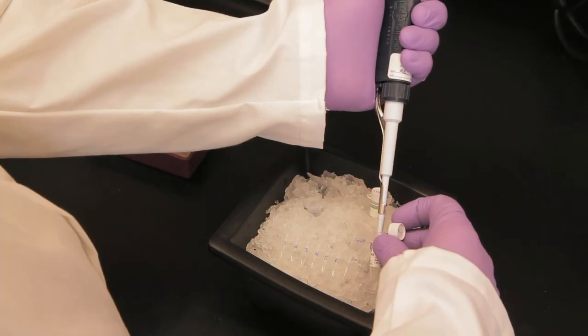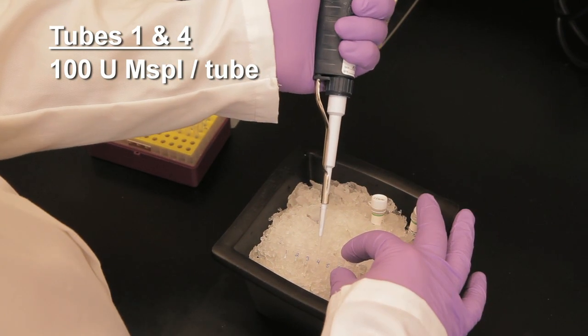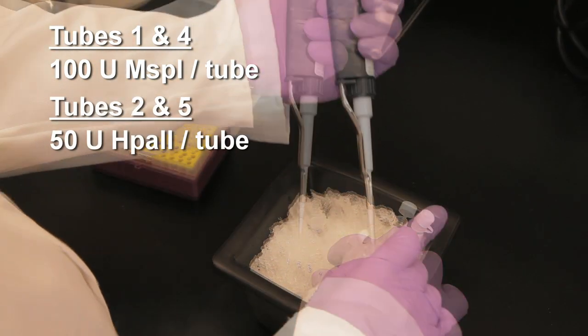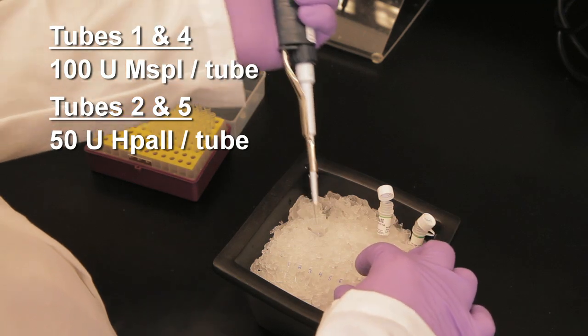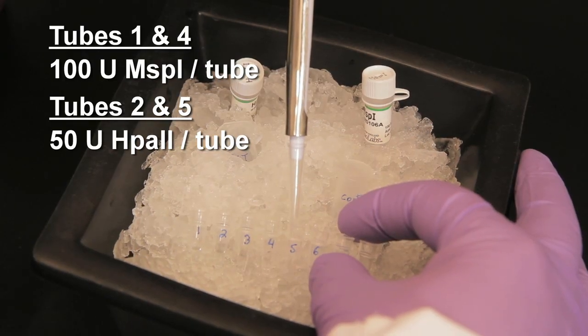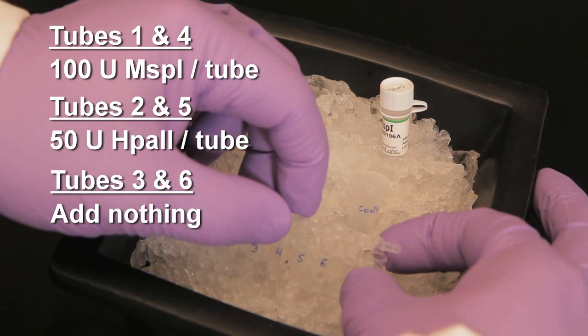Add 100 units of MSP1 into tubes 1 and 4. Next add 50 units of HPA2 into tubes 2 and 5, and mix well by gently pipetting up and down. Do not add anything to tubes 3 and 6 as they are controls.